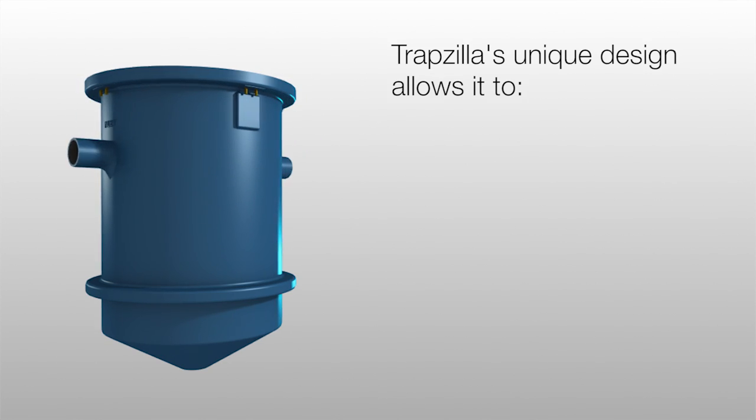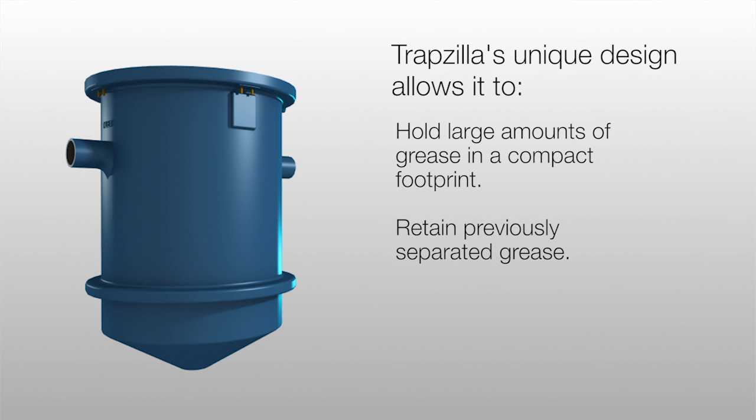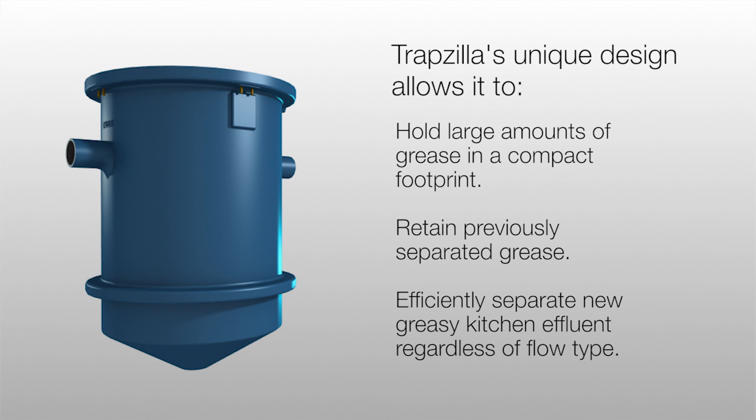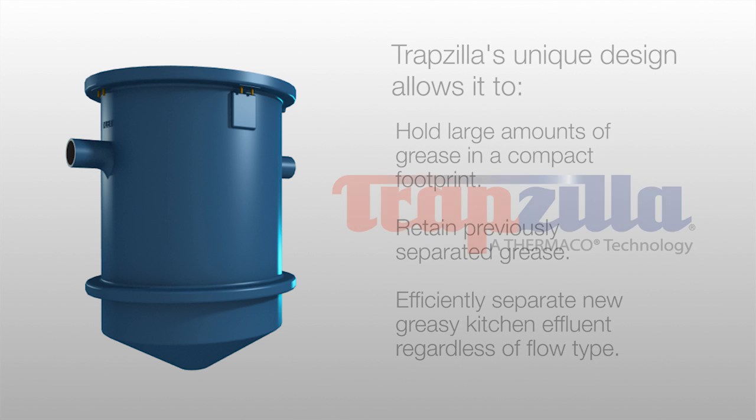Trapsilla's unique design allows it to hold large amounts of grease in a compact footprint, retain previously separated grease, and efficiently separate new greasy kitchen effluent, regardless of the flow type.